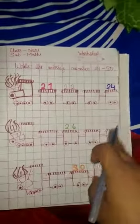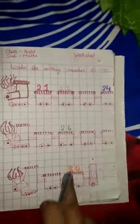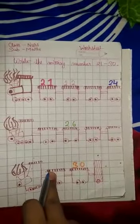Then we have to write 27, then we have to write 28, then we have to write 30. And the missing number before 30 is 29.